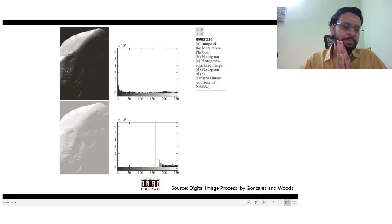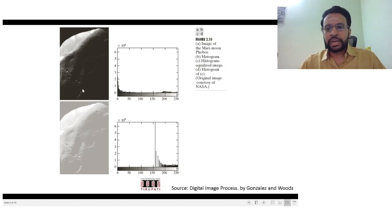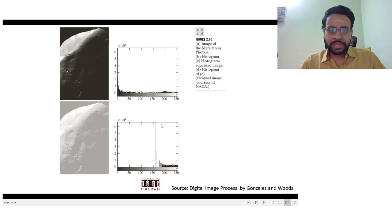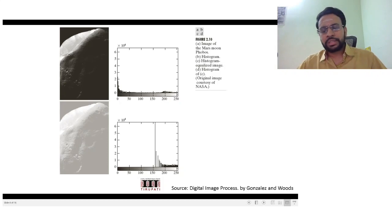I just want to show you a few examples, again taken from the digital image processing book by Gonzalez and Woods. This is, for example, the image of one of the moons of Mars captured by NASA. If you apply a simple histogram equalization, this is what the histogram gets transformed to, and this would be the resulting image. On the contrary, many images at different time instances of the same moon would be captured by the satellite.